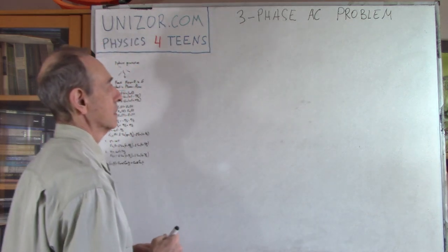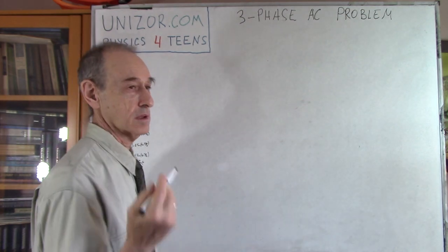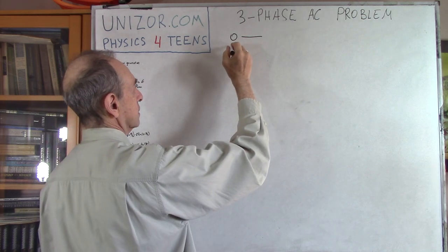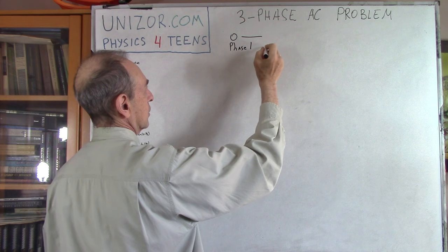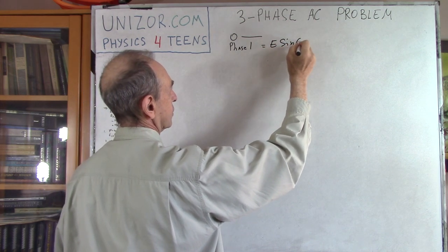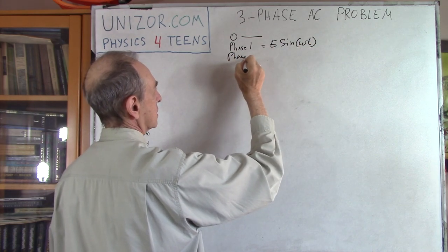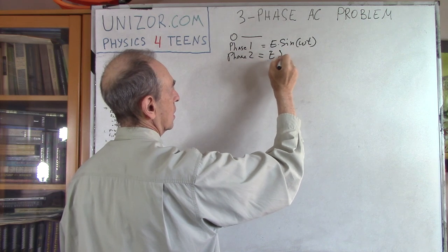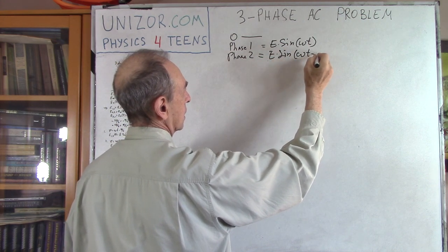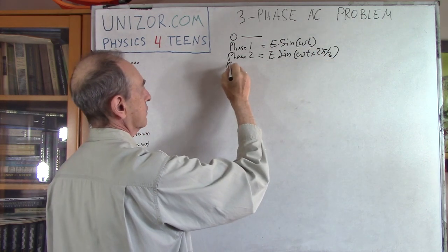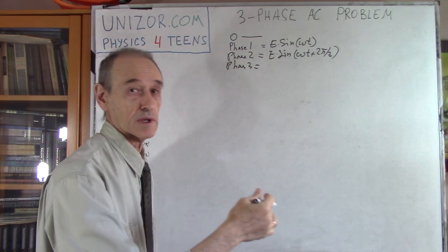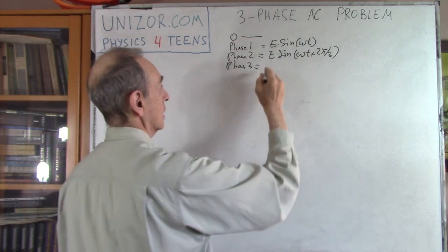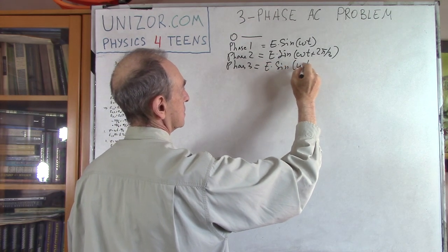So here is the problem. Let's say you have a three-phase generator. It has four different wires: zero, which is basically like ground; phase number one, which is V₀ times sine of ωt; phase two, which is shifted by 120 degrees (two pi over three); and phase three, which is shifted by yet another 120 degrees — that's four pi over three, or the same thing as minus two pi over three, because two pi is a period of the sine function.